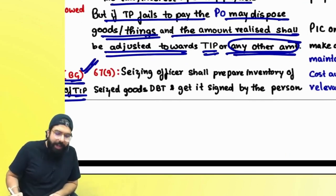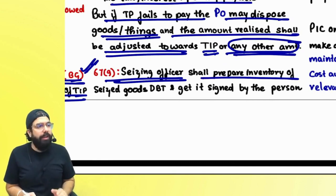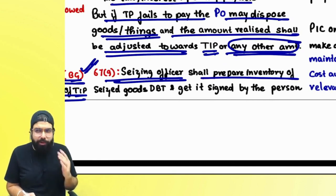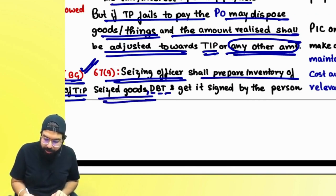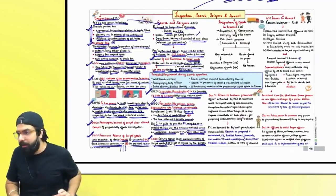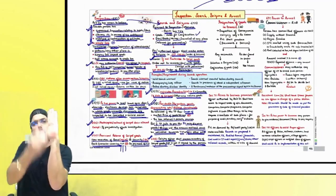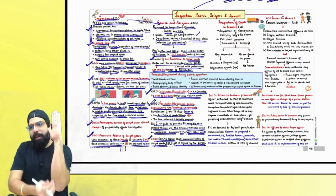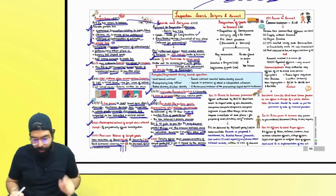Section 67(9) — whoever is the officer seizing the goods and taking along documents, books, etc., they will prepare one inventory of the seized goods, documents, books and things, and get it signed by that person. It is called a Panchnama or a Mahajar. They will tell you — these are the documents, books, goods, and things we are taking along — please sign it.